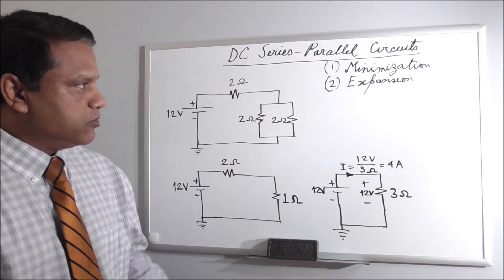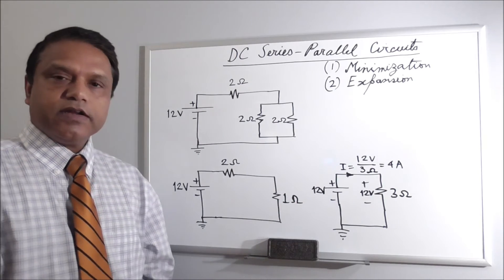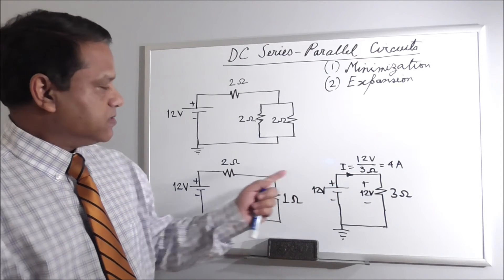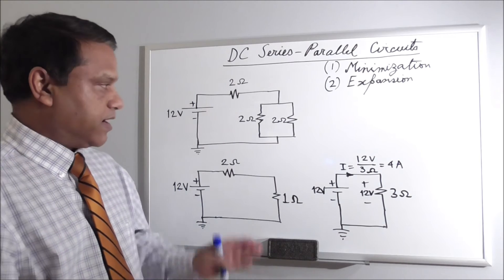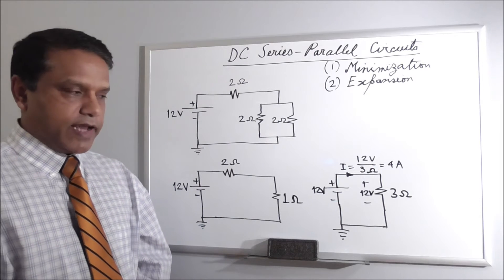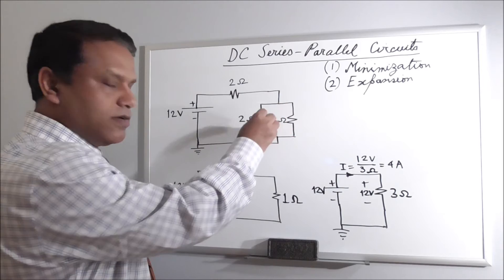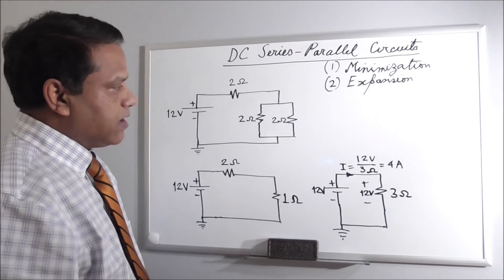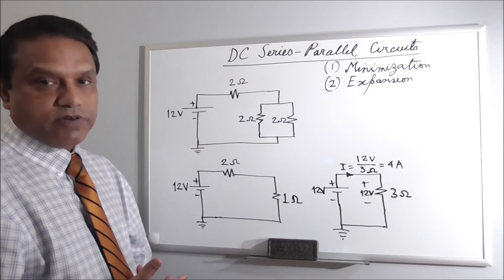Now we do the expansion and go back to find other voltages and currents. We have found the source current — the current through the battery — but we still need to find the currents through the individual branches and other voltages. Before doing that, remember: we found the combined resistance of those two parallel resistors, and you can only combine resistors if they have two terminals.